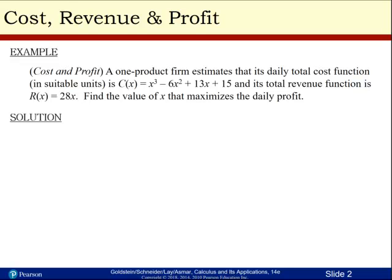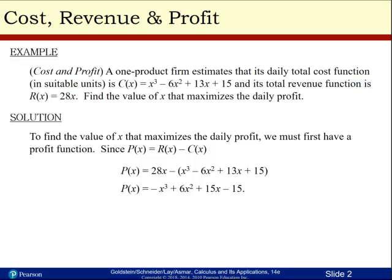Here's our example for cost and profit. A one product firm estimates that its daily total cost function in suitable units is c of x equals x cubed minus 6x squared plus 13x plus 15, and its total revenue function is r of x equals 28x. We need to find the value of x that maximizes the daily profit. First step, we must first have a profit equation.